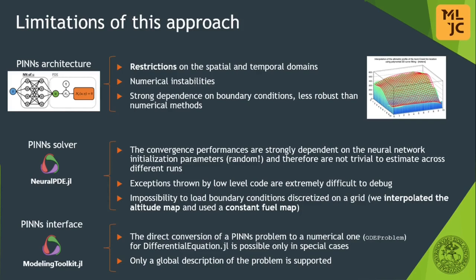During our work we found the following limitations to our approach. The physics-informed neural networks model works well only on scaled-down versions of a real domain and is sometimes subject to numerical instabilities. Furthermore, we observed a strong dependence of the neural network behavior on the parameter initialization, rendering the comparison between runs difficult. In addition, the NeuralPDE and ModelingToolkit libraries have some limitations that were difficult to overcome. In particular, the inability to provide a grid of inputs in the PDE problem made it impossible to exploit the fuel map, explaining the discrepancy between our model and the baseline seen before.